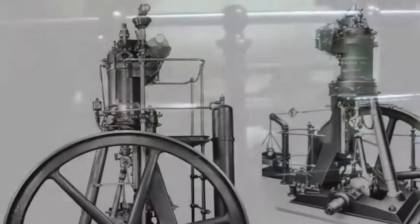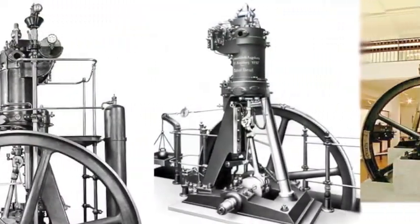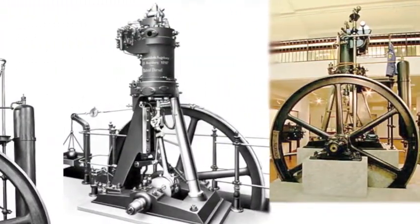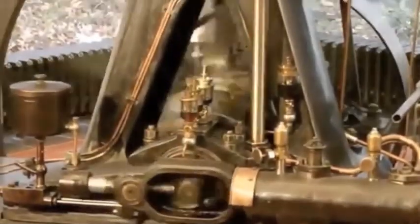Rudolf Diesel thought about using this process in reverse. Igniting a flammable liquid within the cylinder would result in the ignited gases pushing the piston. This could then be used to rotate a crankshaft, which could then directly drive the wheels of a vehicle. So in 1893, the diesel engine was born.